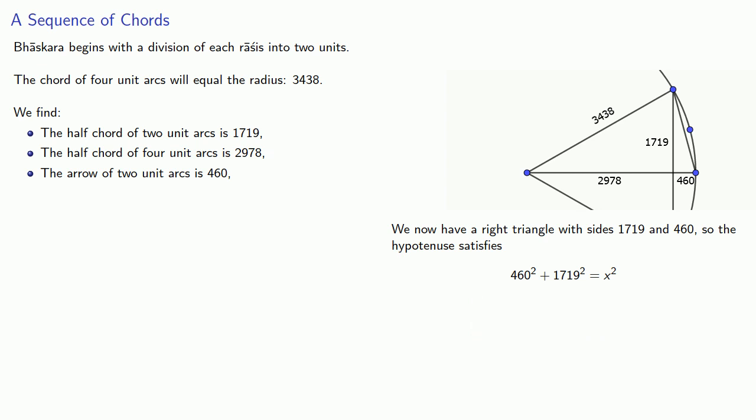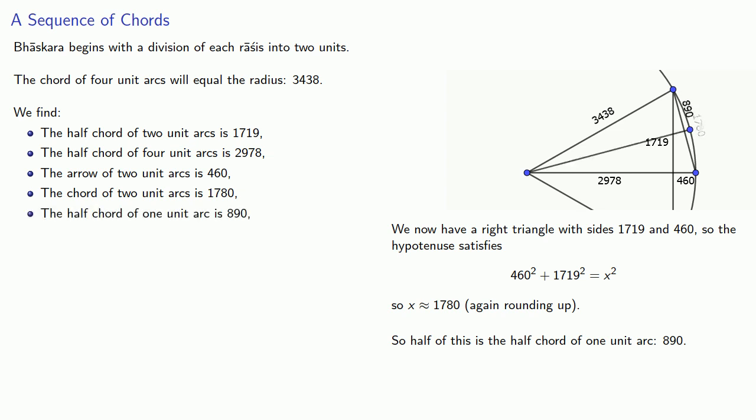And again, if we solve this and round up, we get the value that Bhaskara used, 1780. And the important thing to understand here is this is the full-chord of two-unit arcs. So half of this is the half-chord of one-unit arc, 890.